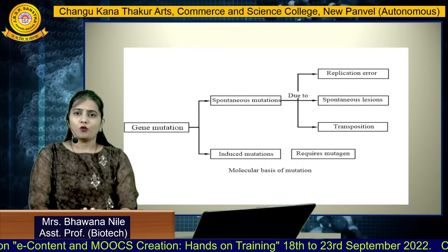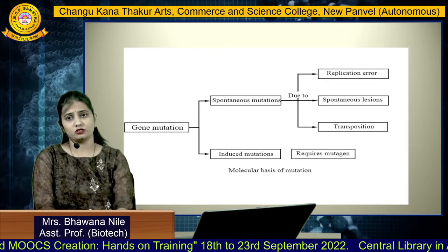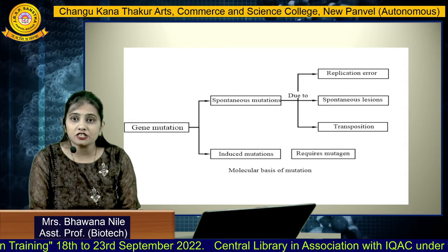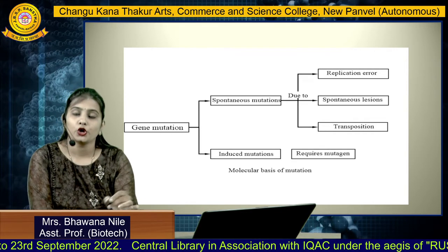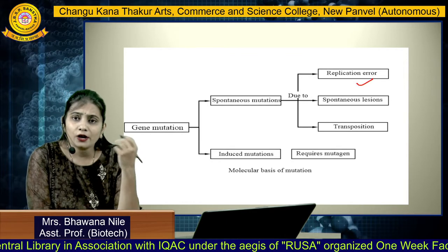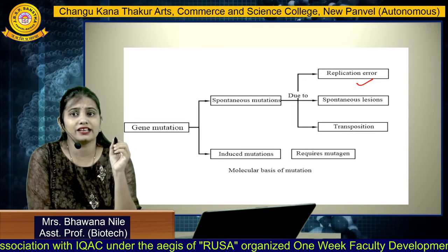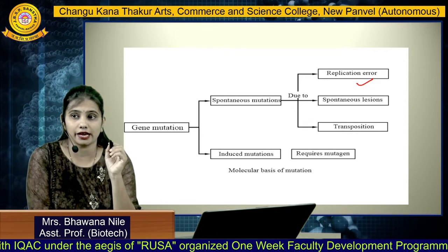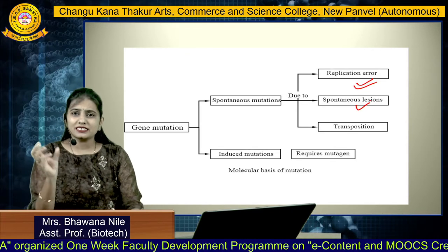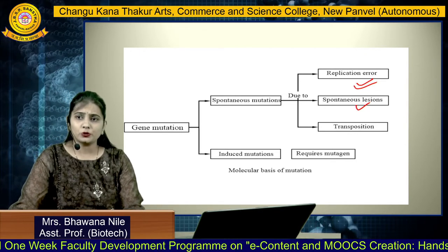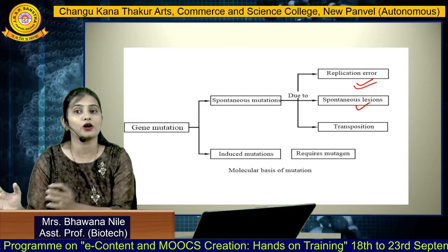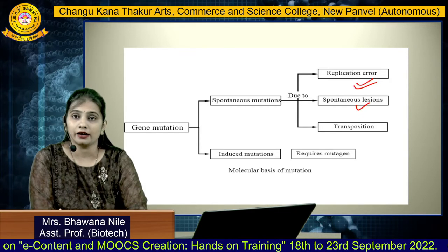Now, what is the molecular basis of gene mutations? Mutations can occur spontaneously. The molecular basis of spontaneous mutations includes replication errors — since DNA replicates itself, if there is an error or mistake in copying the DNA sequences, it may lead to spontaneous mutations. Next, if there is a spontaneous lesion — meaning some damage in the structure of the DNA, sequences, or base pairs — it may lead to sudden spontaneous change, categorized under spontaneous lesions.